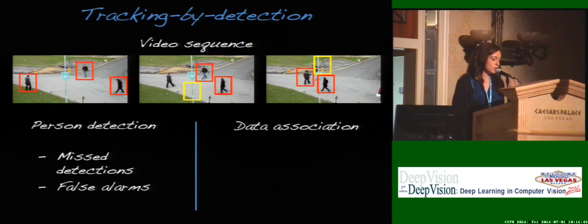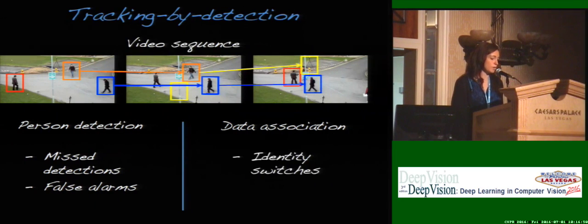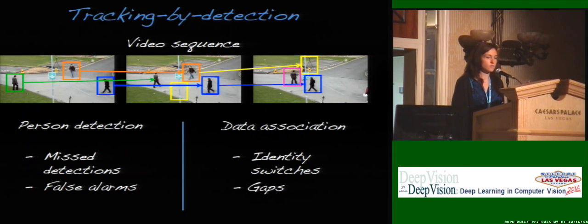At the data association step — which is when we actually want to link the detections into full trajectories — we can have problems such as identity switches or wrong matches, and we can also have gaps in the trajectory.